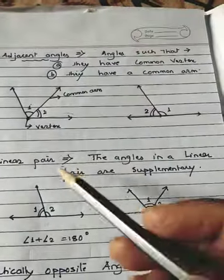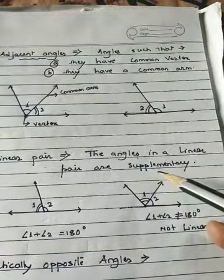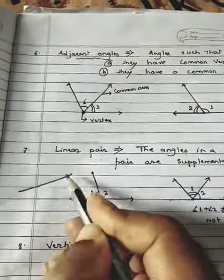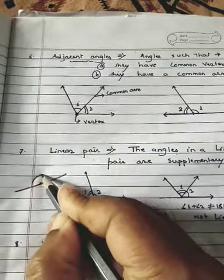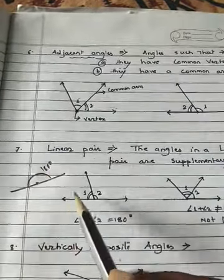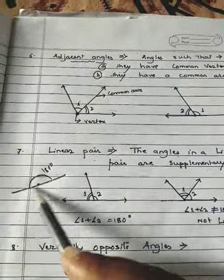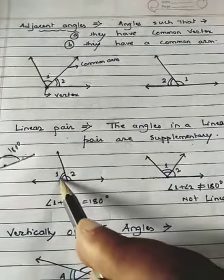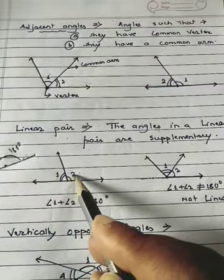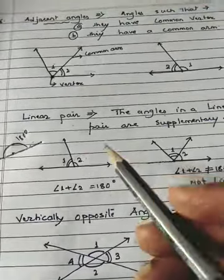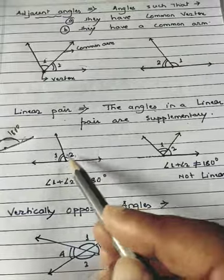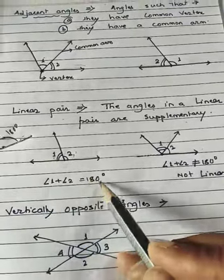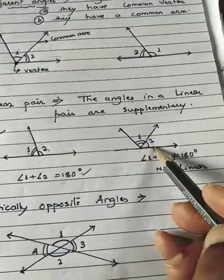Now, what is a linear pair? The angles in a linear pair are supplementary, meaning their sum is always 180 degrees. A straight line always comprises 180 degrees. So if a straight line is divided into two angles, the sum of those two angles equals 180 degrees. Angle one plus angle two equals 180 degrees. Though they are adjacent — sharing a common vertex and arm — when their sum is 180 degrees, they are called a linear pair.